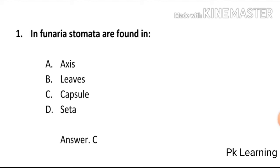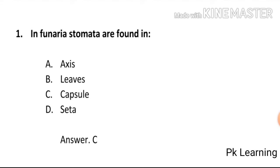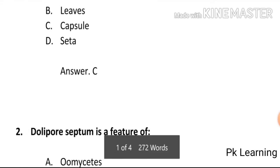Inferior stomata are found in: A) excess leaves, B) capsule, C) Japeed, D) Cita. The answer is C, capsule. Inferior stomata are found in the capsule. C is the correct option.